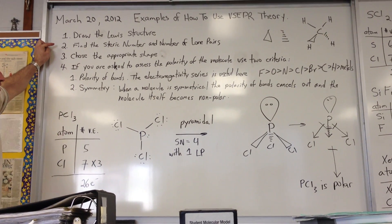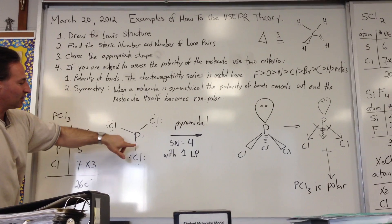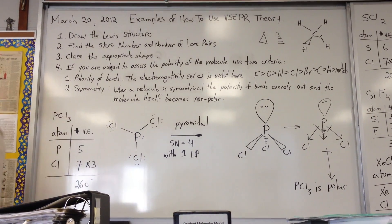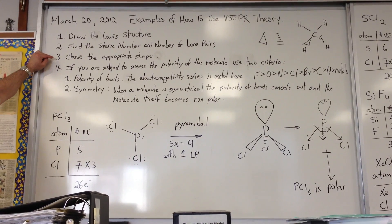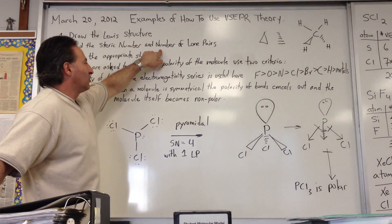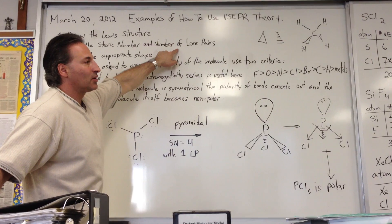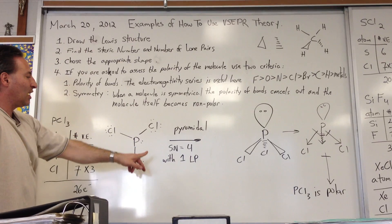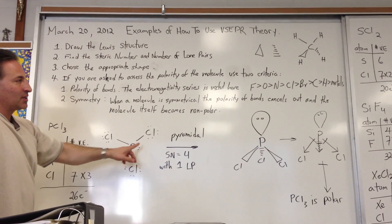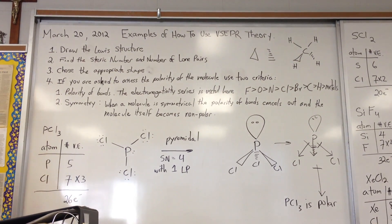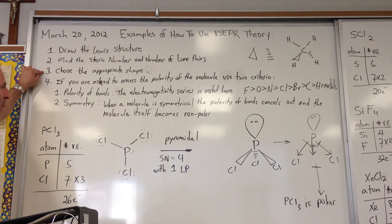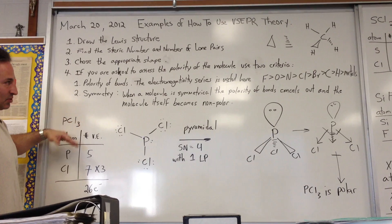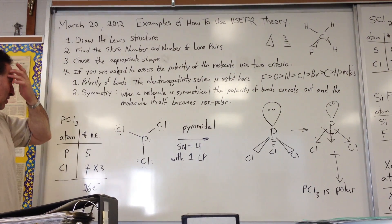You find the steric number of the molecule, meaning how many different groups are attached to the central atom. We count both lone pairs and bonding pairs as groups. You also have to say how many lone pairs are present, because that helps you determine what the shape is going to be. Then you choose the appropriate shape. From yesterday's notes, we have a chart that tells us all the different shapes based on the steric number and the number of lone pairs.